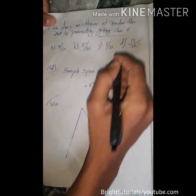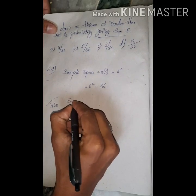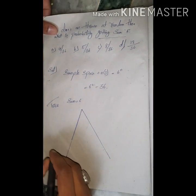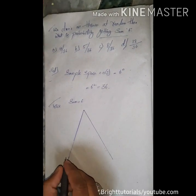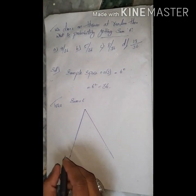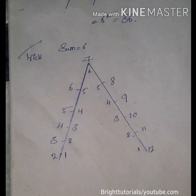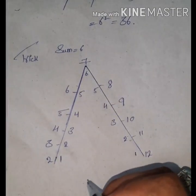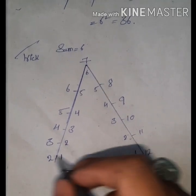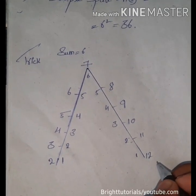We need to find the probability of getting a sum equal to six. For this, we use a special triangle trick that works for two dice. To use this trick, draw a triangle and give numbering on the left side starting with two, and on the right side ending with twelve.